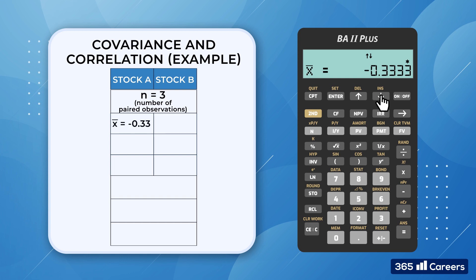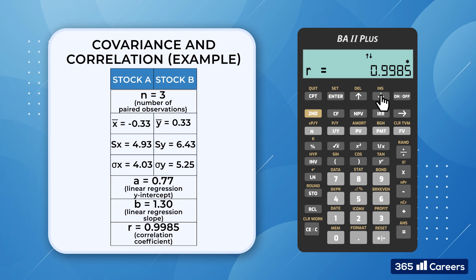Then we have the mean, sample standard deviation, and population standard deviation of x. If we keep scrolling down, we will obtain similar statistics for the y-variable as well. Next, we have a, which stands for the Linear Regression Intercept, while b is the Linear Regression Slope. And finally, we are able to find r, the correlation coefficient. The calculator will not tell us directly the covariance between the two stocks.